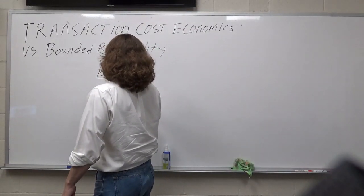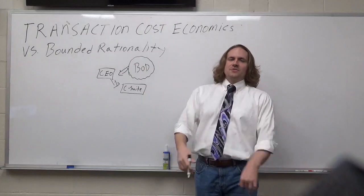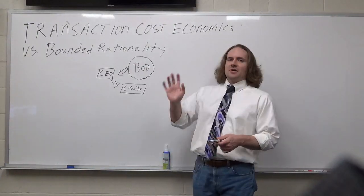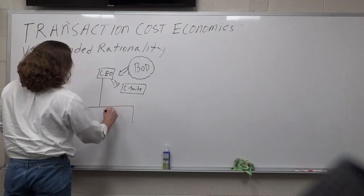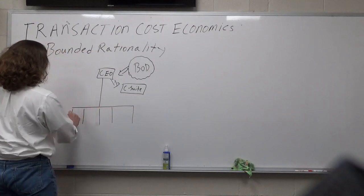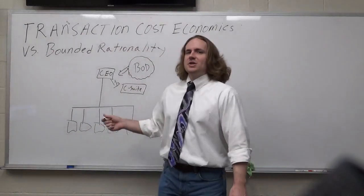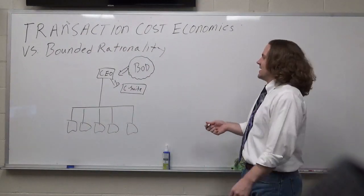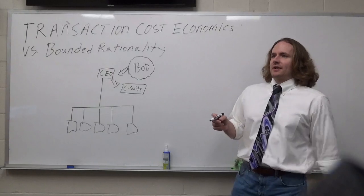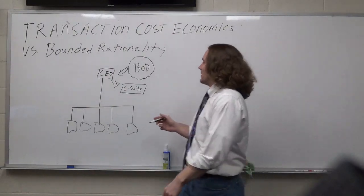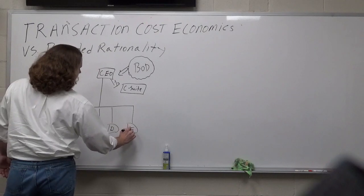The CEO has their functional staff, also known as the C-suite: COO (Chief Operating Officer), CHRO (Chief Human Resources Officer), CFO (Finance), and so on. Beneath this, you have a variety of strategic business units, which ideally could be stand-alone businesses if they had to be. You've got products or services A, B, C, D, and E.